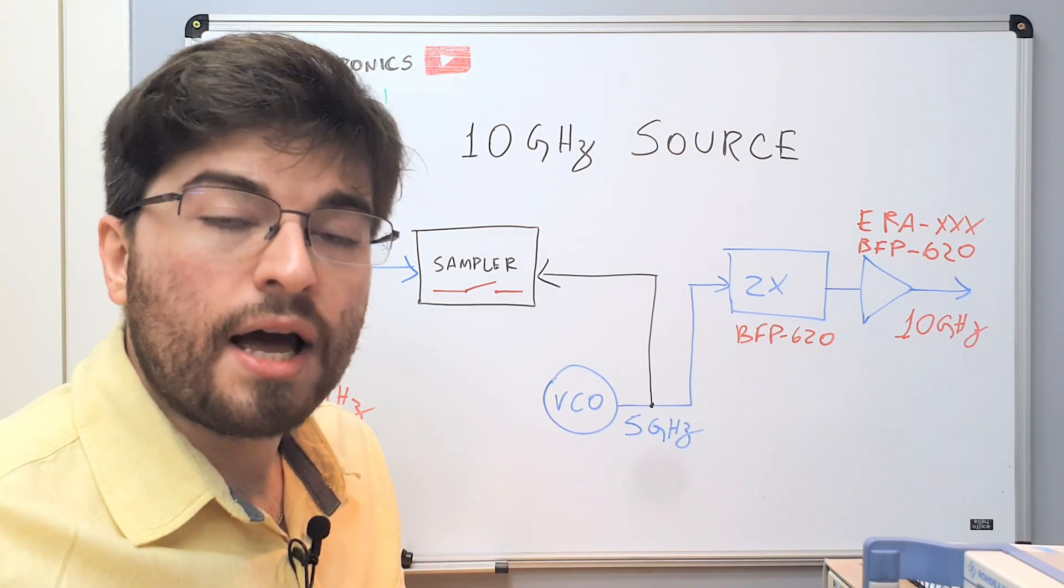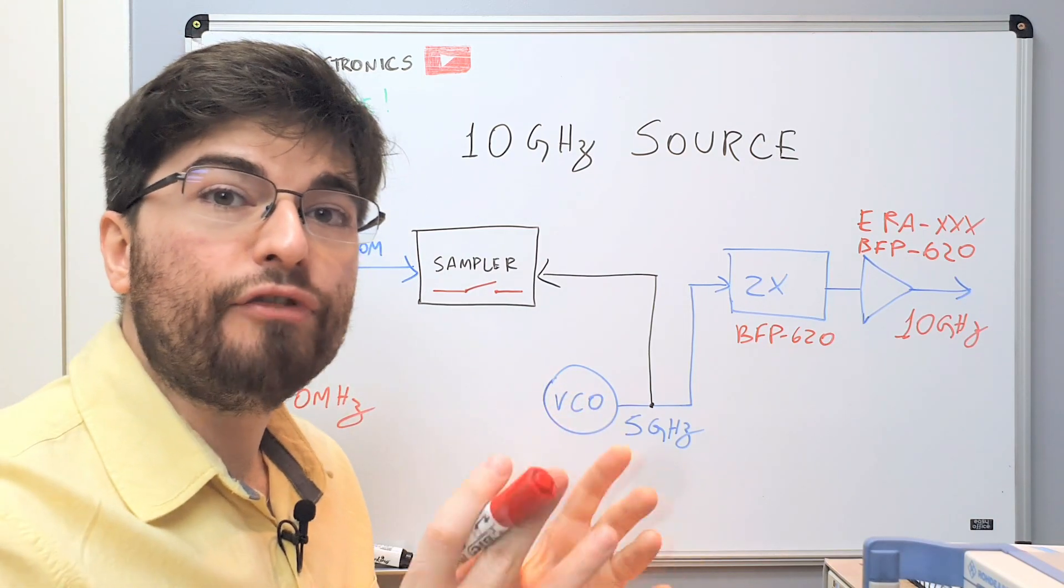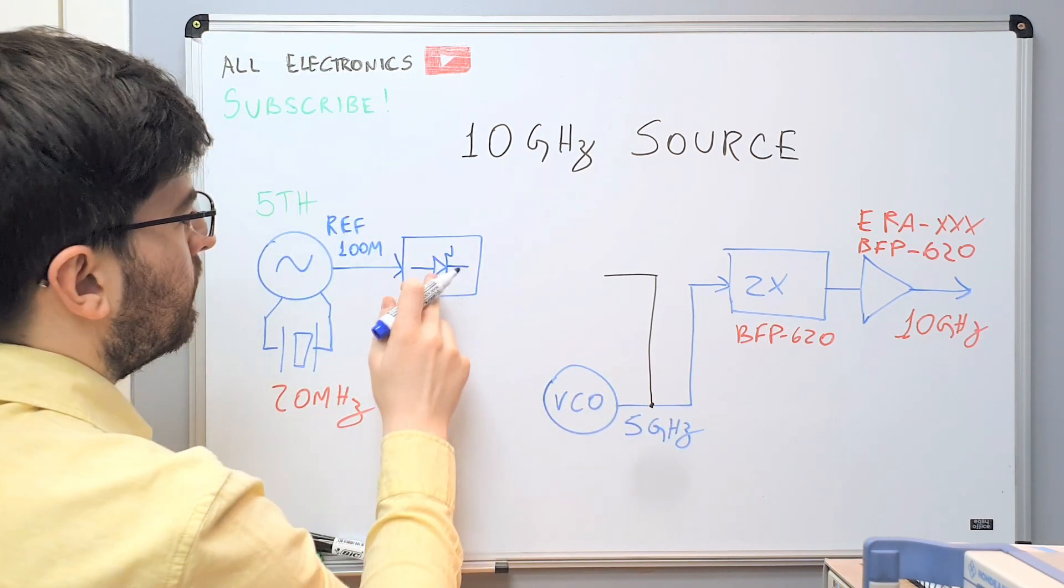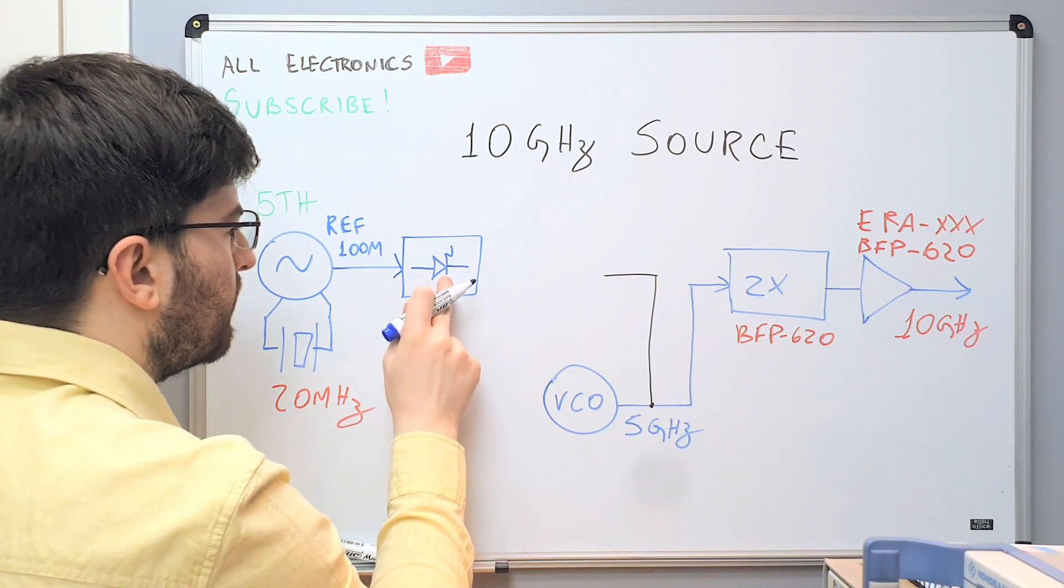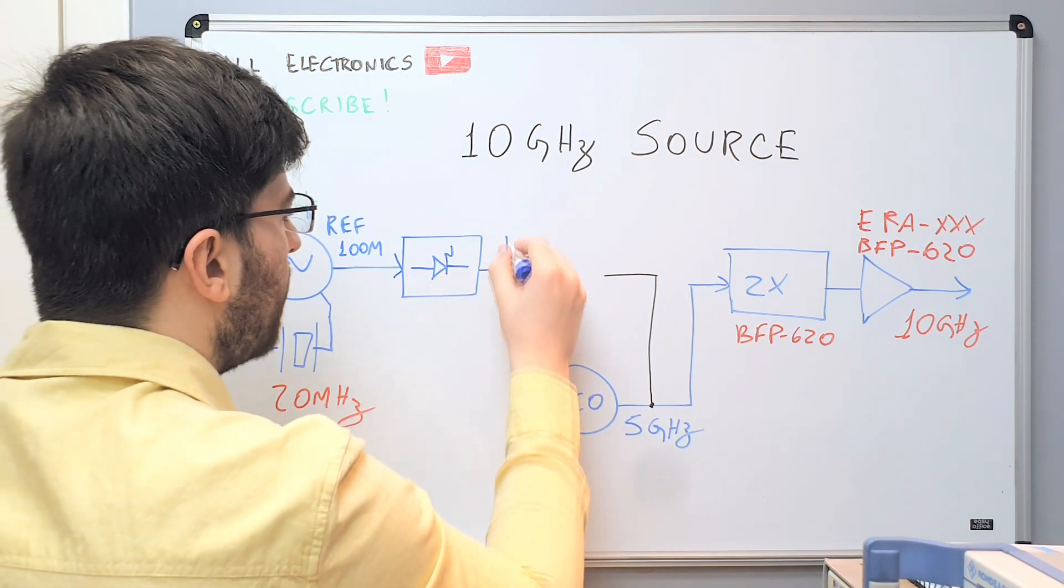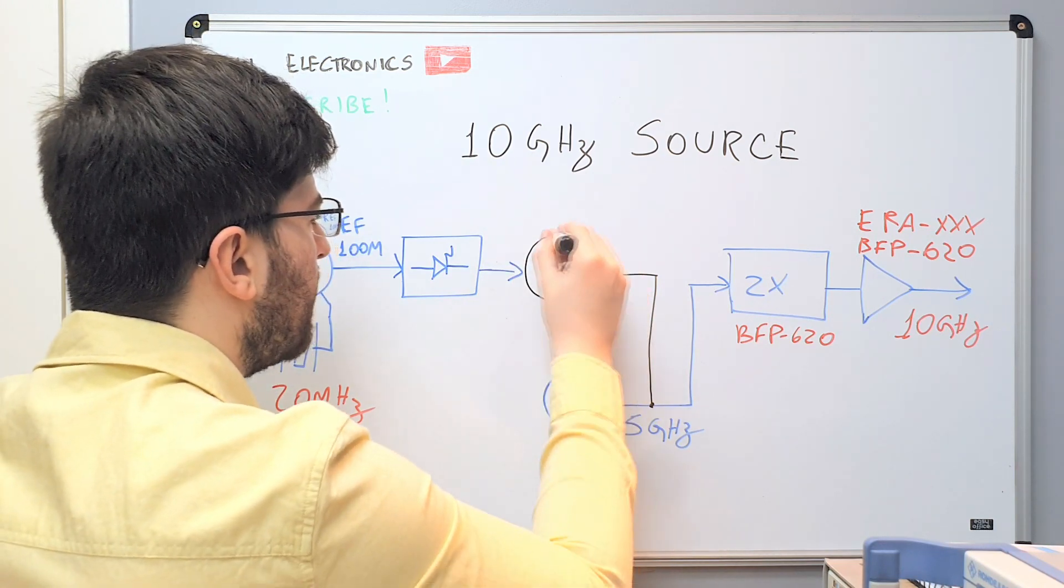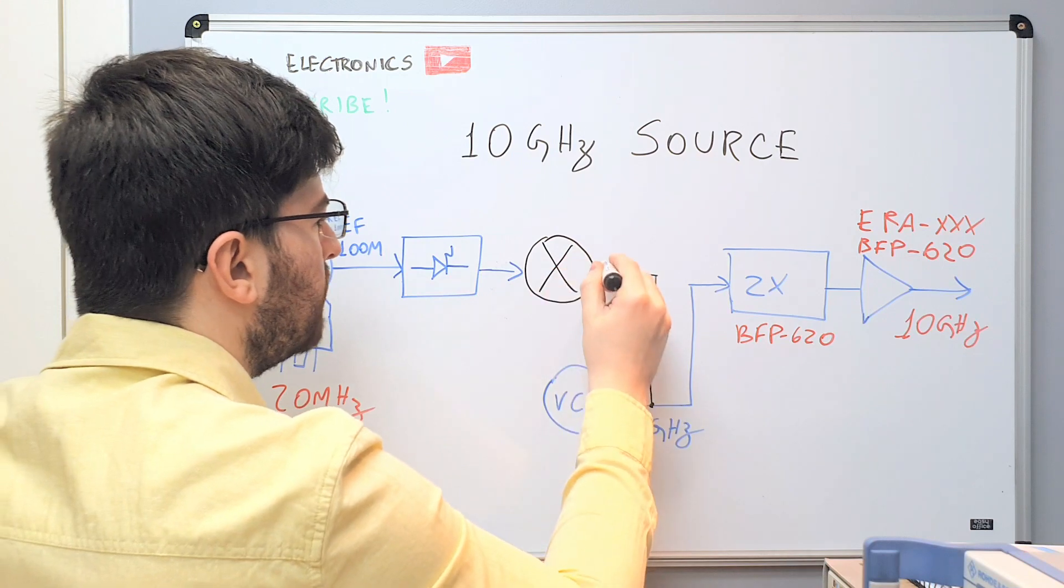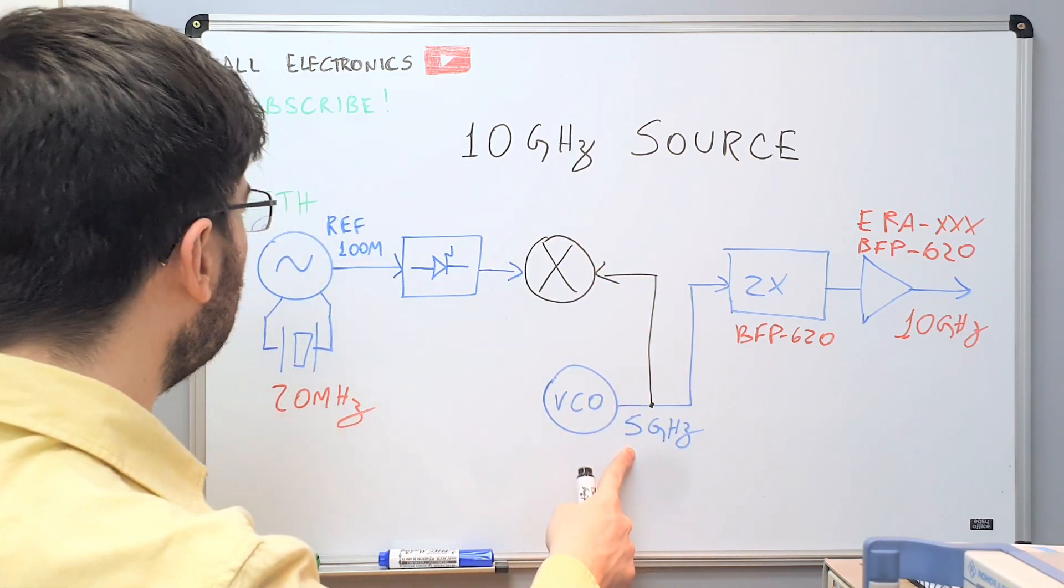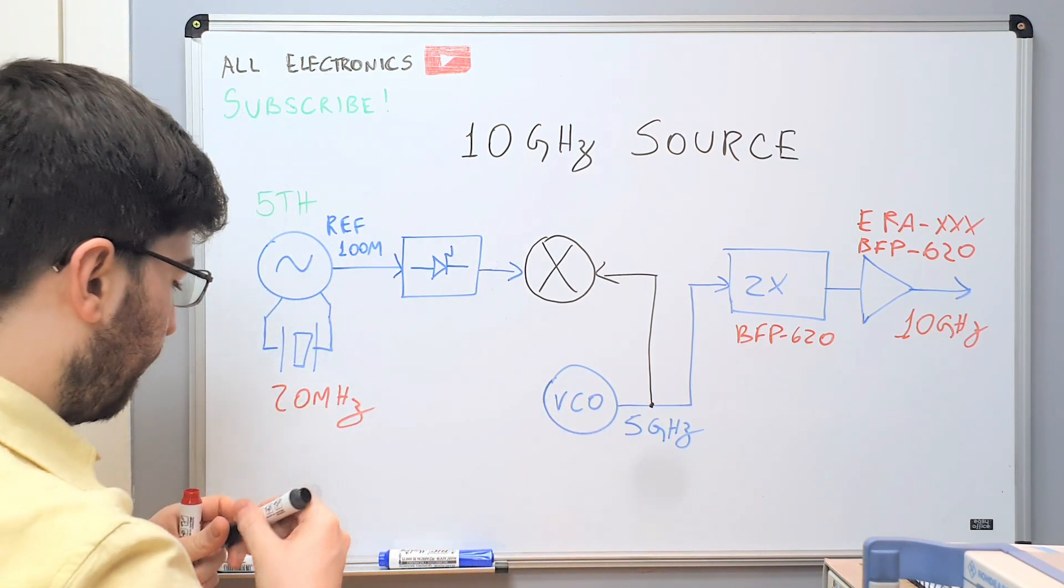It's made with a Schottky diode bridge and a step-recovery diode. The sampler can actually be modeled as a comb generator with a very high frequency mixer. The comb generator, a step-recovery diode here, and this comb here will enter the sampler that we can draw here as a very high-speed mixer. So we are going to mix the 5 GHz signal of the VCO with the 5th harmonic.